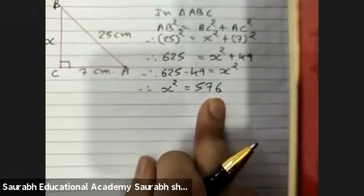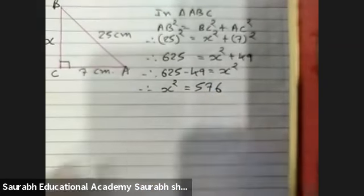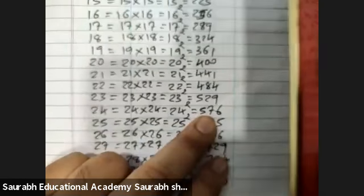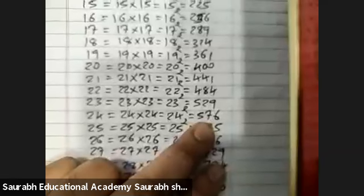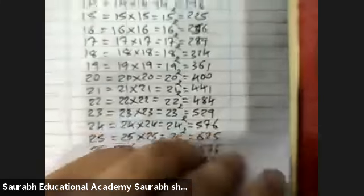You all know 576 is the square of 24. Yesterday I mentioned to you all, 24 square is 576. Can you see? Yes, 24 square is 576.